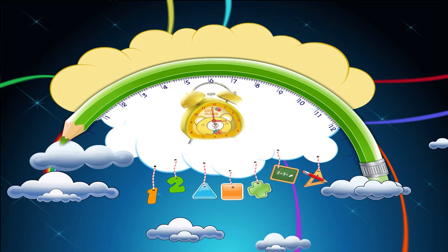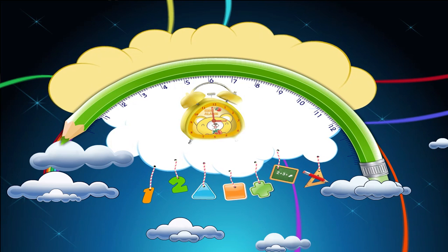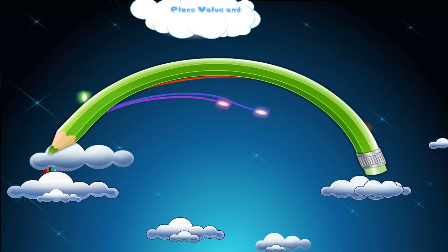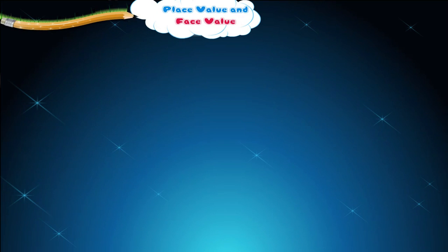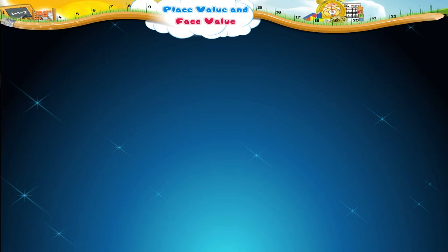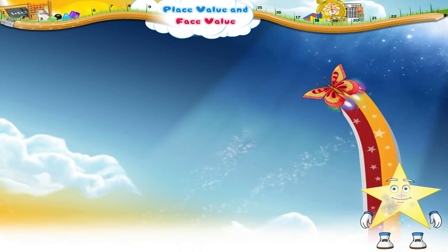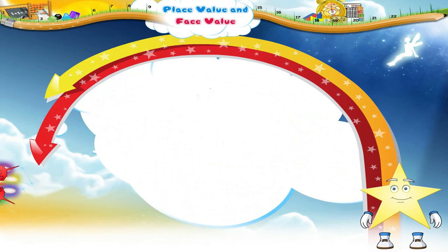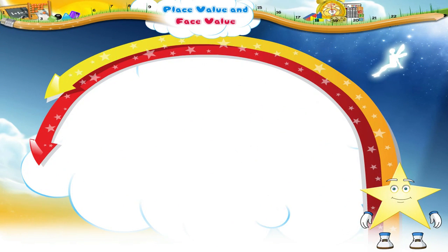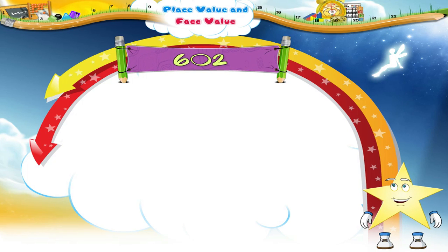Place value and face value. Starry, come on, give me a three-digit number. Okay, so you have given me six hundred and two.